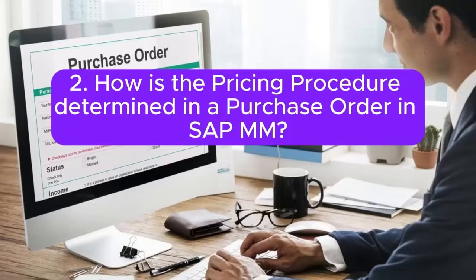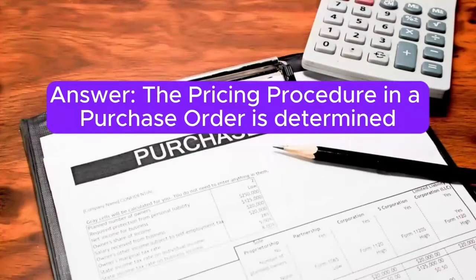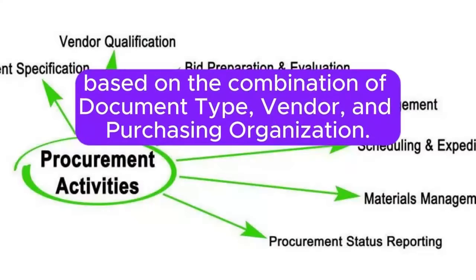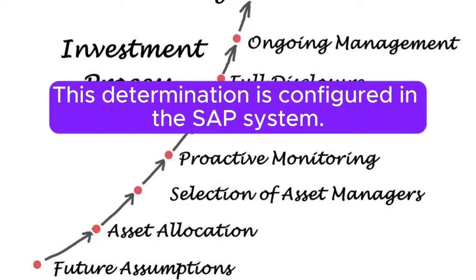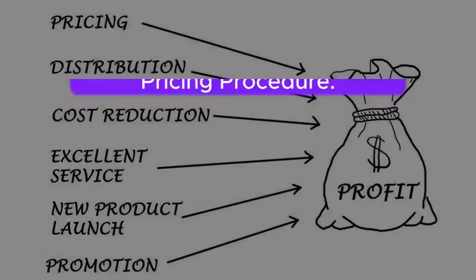Question 2: How is the pricing procedure determined in a purchase order in SAP MM? Answer: The pricing procedure in a purchase order is determined based on the combination of document type, vendor, and purchasing organization. This determination is configured in the SAP system.